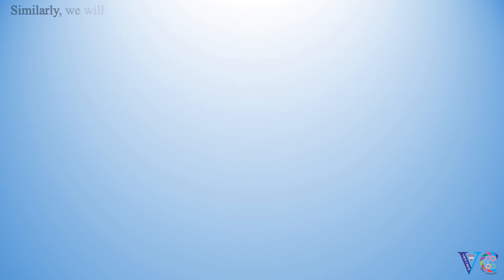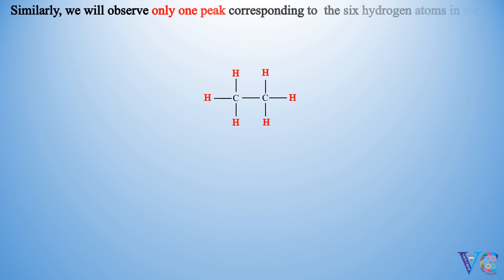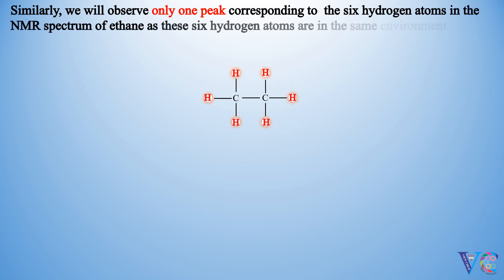Similarly, we will observe only one peak corresponding to the 6 hydrogen atoms in the NMR Spectrum of ethane, as these 6 hydrogen atoms are in the same environment.